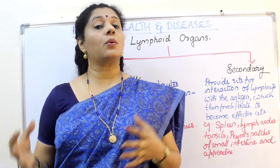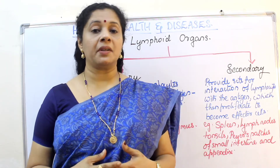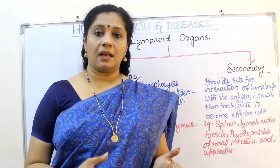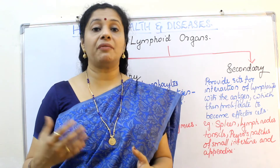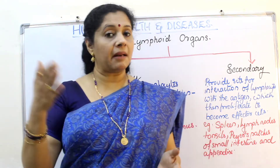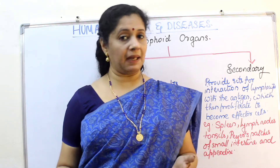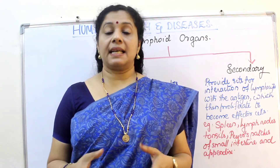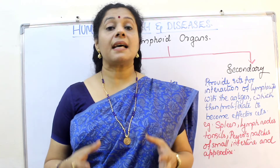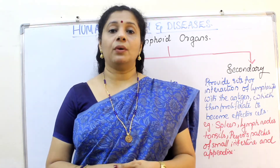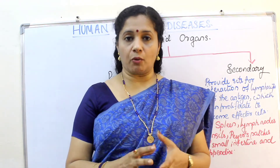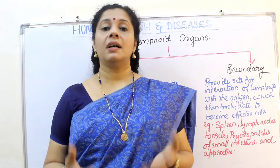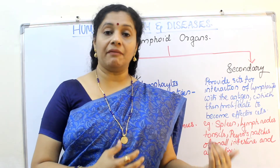Once a civilian is recruited into the army, they cannot be directly sent to the war field. First they need training — physically, mentally — and they must be prepared to face hardships. Their training differs depending on whether they are air force, army, or navy. The same way, these lymphocyte cells have to be trained. They are basically produced in the bone marrow, and after formation these immature cells — like civilians — move to the primary lymphoid organs.